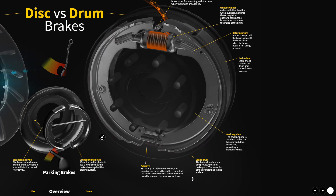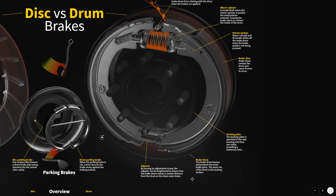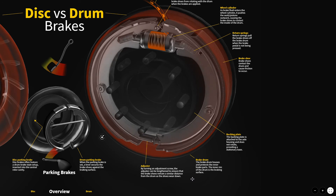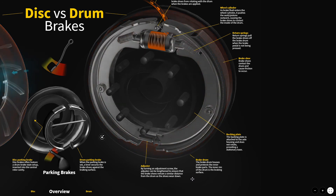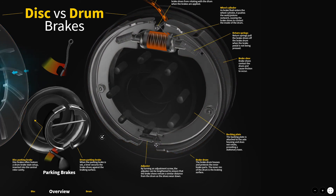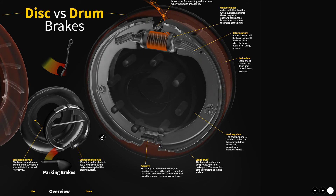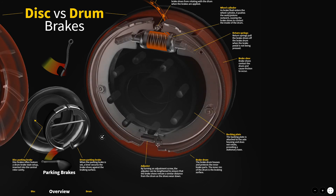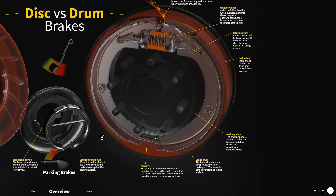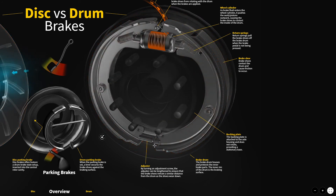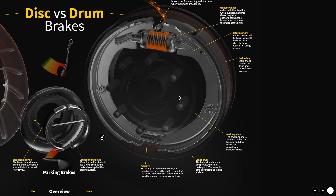Make sure that star wheel adjuster is free when you go to service drum brakes. You will often have to remove the brake drum, and technicians can use a brake spoon to back off that self-adjuster. There will often be a hole in the backing plate or possibly in the drum to allow them to turn the self-adjuster and release the brakes.